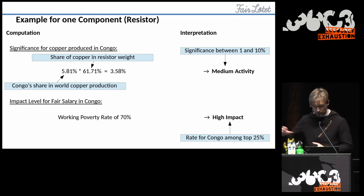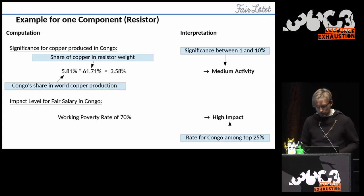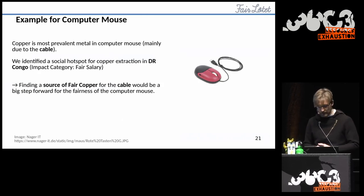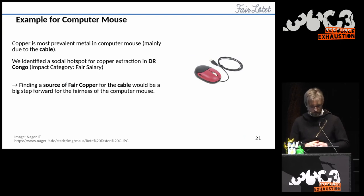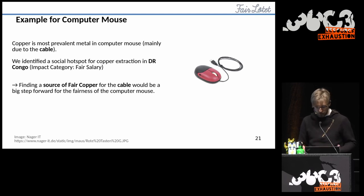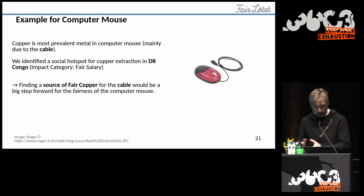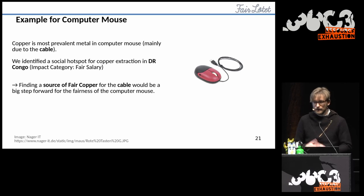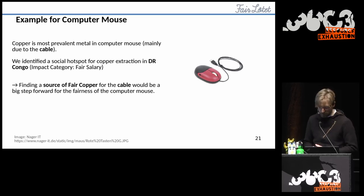Then, how severe are the impacts in Congo? If we take our example of fair salary, we have the working poverty rate of 70%, which is among the top 25% of rates for all the countries we have for this indicator — and anything in that top 25% we qualify as high impact. If we do this for our whole product — the computer mouse — we can actually see that copper is not only the most prevalent metal in the resistor, but for the whole computer mouse mainly due to the cable. So we've identified a social hotspot: copper extraction in Congo, in the impact category of fair salary. One interpretation would be: if we find a source of certified copper for the cable, or find some producer of cables willing to work with us in improving the situation, that would be a big step forward for the fairness of the computer mouse.